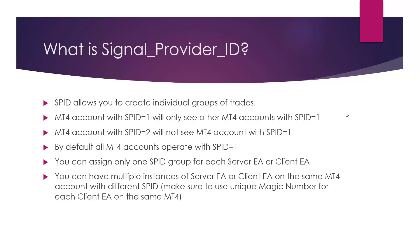You can assign only one SPID group for each server EA and client EA. This is important to know because you cannot set the same client EA or server EA to operate in two or more different signal provider ID groups.